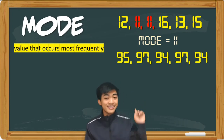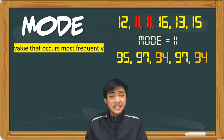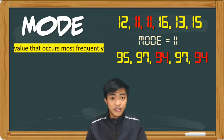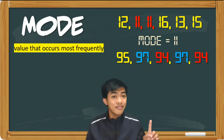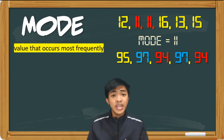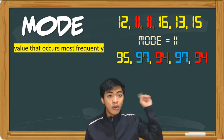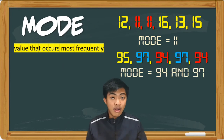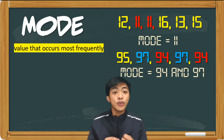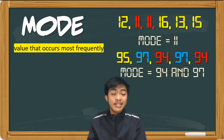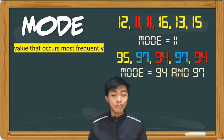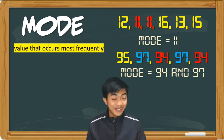What about this dataset? So kung titignan natin to, 94 appeared twice, 97 appeared twice as well, tapos si 95 mag-isa lang. So we can actually have one or more values for the mode. So in our second dataset, the modes are 94 and 97. Meron tayong kinatawag na dataset na unimodal — unimodal ang dataset natin kung isa lang ang mode. Bimodal naman kung dalawa ang mode. Trimodal kung tatlo and so on.